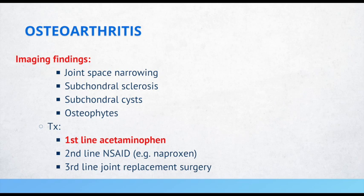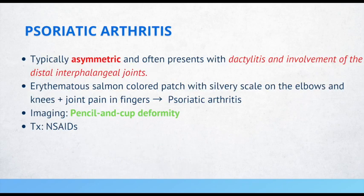Psoriatic arthritis. This condition is typically asymmetric and often presents with dactylitis and involvement of the distal interphalangeal joints. An erythematous salmon-colored patch with silver scales on the elbows and knees, along with joint pain in the fingers, may all be indicative of psoriatic arthritis. When you do imaging of these joints, you may see a pencil-in-cup deformity. Preferred treatment is with NSAIDs.